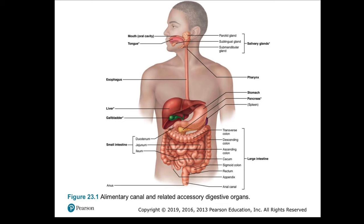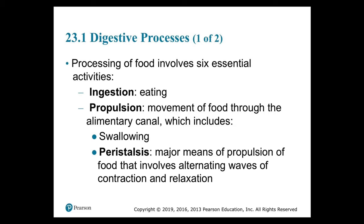Section 23.1: Digestive Processes. The processing of food involves six essential activities. The first is ingestion, or simply eating, which occurs when materials enter the digestive tract via the mouth. Ingestion is an active process involving conscious choice and decision-making. The second activity is propulsion — the movement of food through the alimentary canal — which includes swallowing and peristalsis.